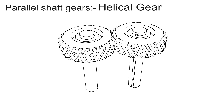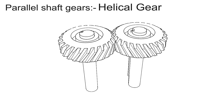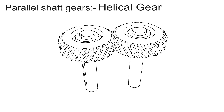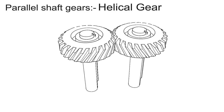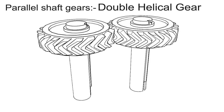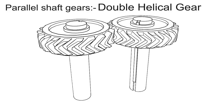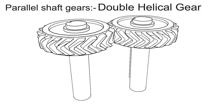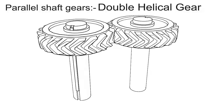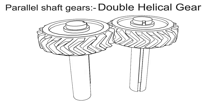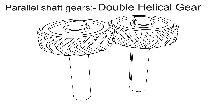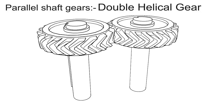Helical gear. In helical gears, the teeth are curved, each being helical in shape, and they are less efficient than spur gears. A double helical gear is equivalent to a pair of helical gears secured together, one having a right-hand helix and the other a left-hand helix. They are mostly used in heavy machinery.